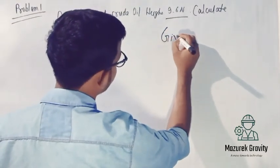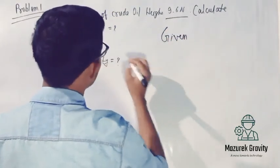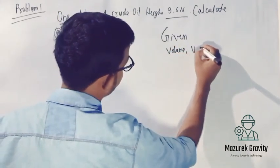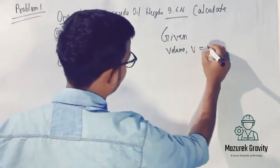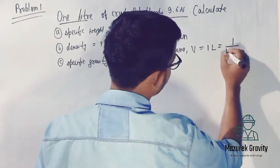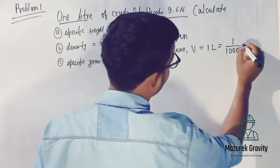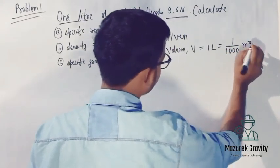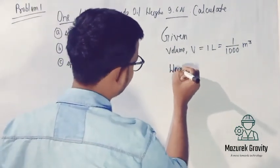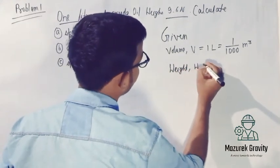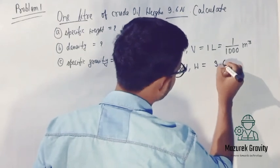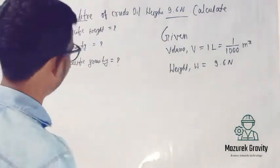Given: Volume V equals 1 liter. Weight W equals 9.6 Newton. The first quantity to find is specific weight.